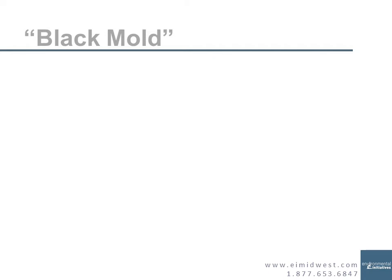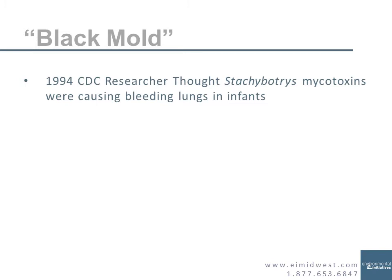Where did the term 'black mold' come from? Back in 1994 there was a single CDC researcher with a single project where they were looking at the bleeding lungs of multiple infants in Cleveland. She believed the issue was the result of exposure to a black colored mold called stachybotrys in the houses. Like many molds, stachybotrys produces various mycotoxins — chemicals used as biological agents to fight off other molds or bacteria or give the mold some other advantage in the environment. She believed inhalation of this mycotoxin from stachybotrys was causing the bleeding lungs.